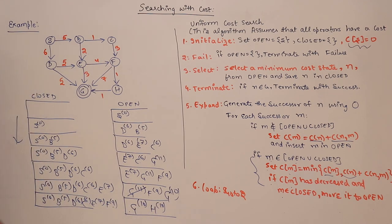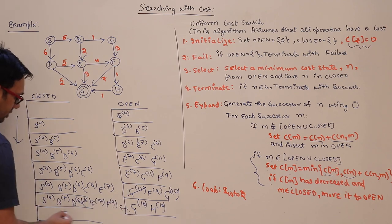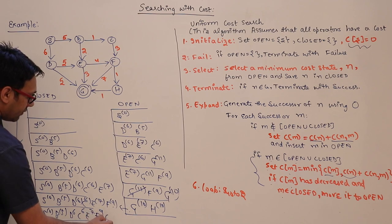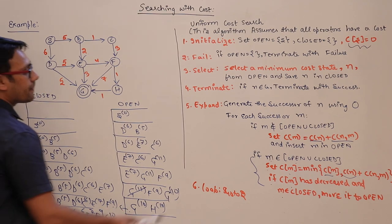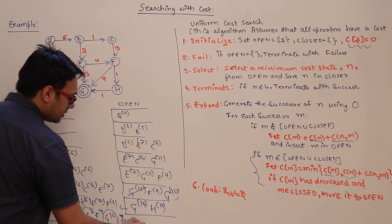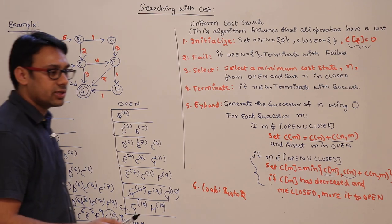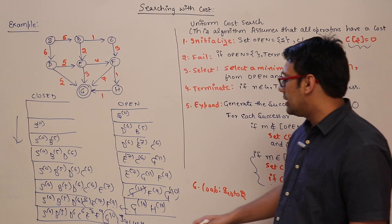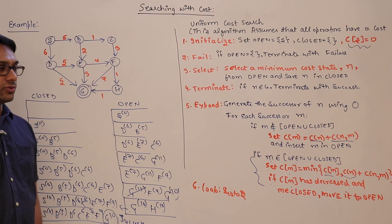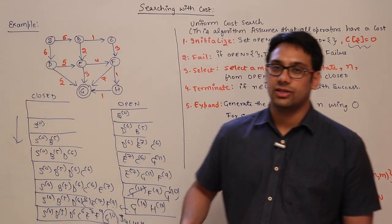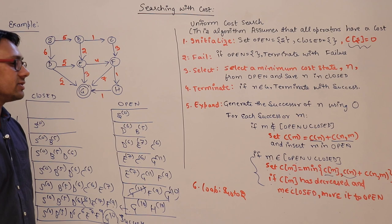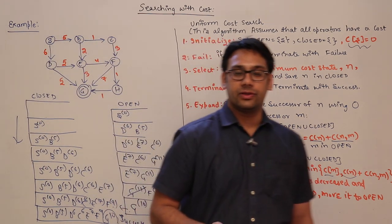We choose G. We put G into closed — closed contains S=0, B=5, D=6, C=6, E=7, F=9, G=10. Now we check: is G a goal state? Yes! So we terminate with success. We have found the goal state G with the minimum cost of 10. This is how Uniform Cost Search works — it finds the optimal solution.